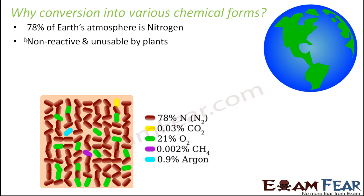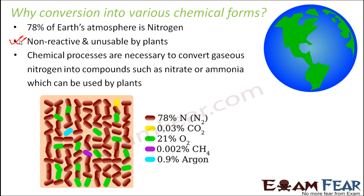Because of these two reasons, it becomes necessary to convert nitrogen into other forms like nitrites and nitrates, because plants can utilize nitrogen in the form of nitrites or nitrates. The chemical processes are necessary to convert gaseous nitrogen into compounds such as nitrates or ammonia which can be used by plants. The nitrogen cycle is all about how atmospheric nitrogen gets converted into nitrates and ammonia, and how those give back gaseous nitrogen to the atmosphere.